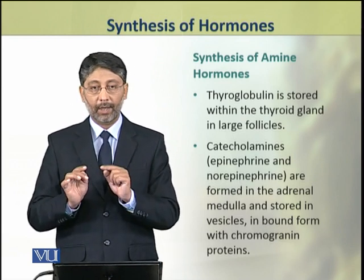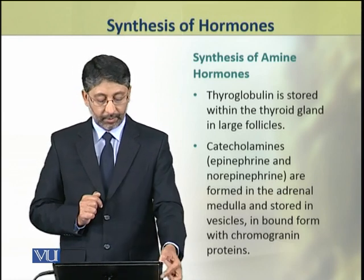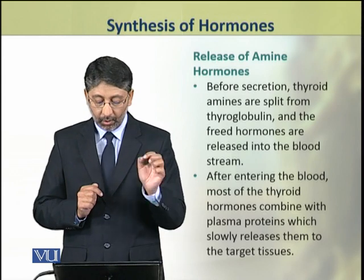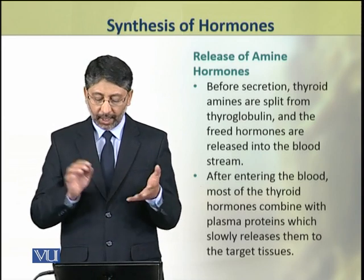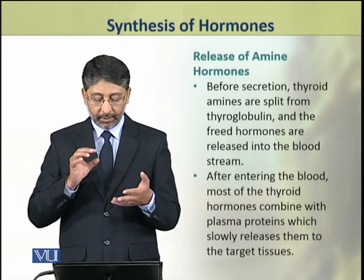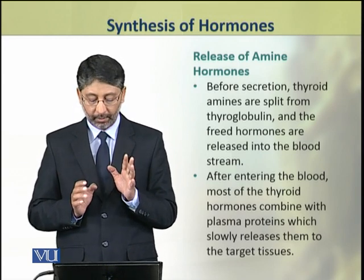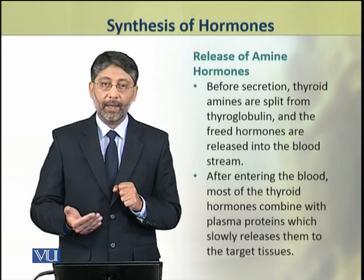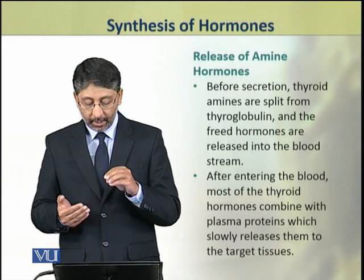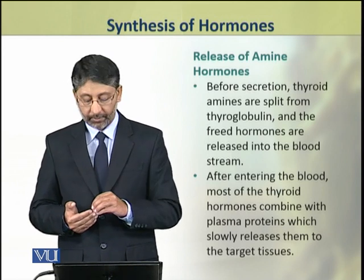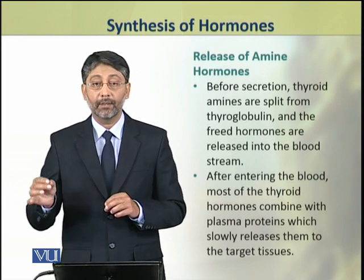Both types of hormones are bound with proteins in the vesicles. However, before secretion, they are cleaved from their respective proteins. Thyroid amines are cleaved from thyroglobulin and the freed hormones are released into the blood. When they enter the blood, these thyroid hormones again combine with plasma proteins, which slowly release them in their target tissues.